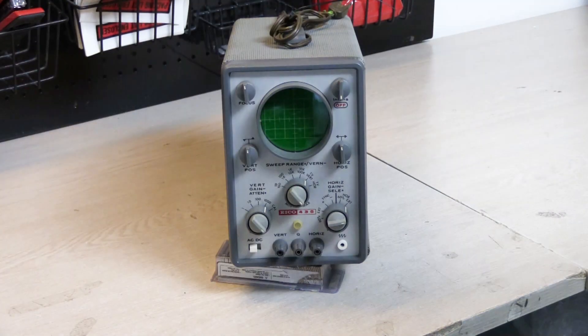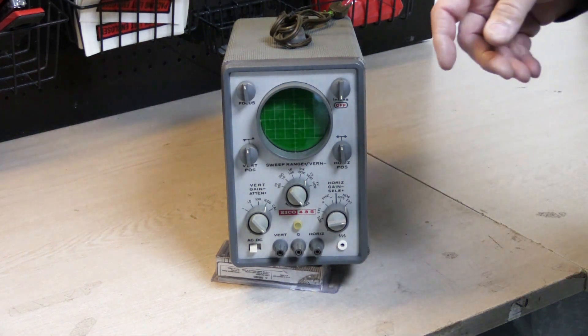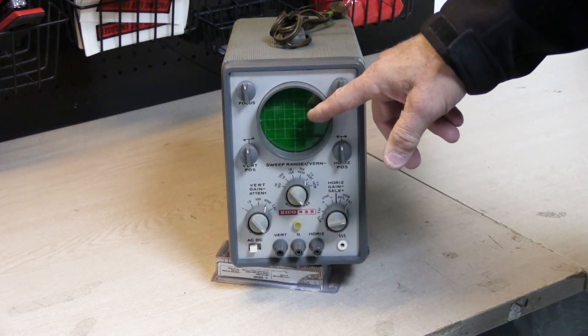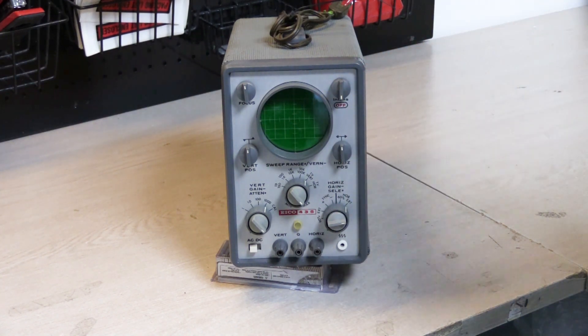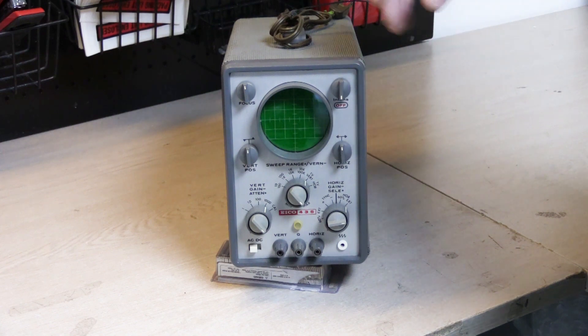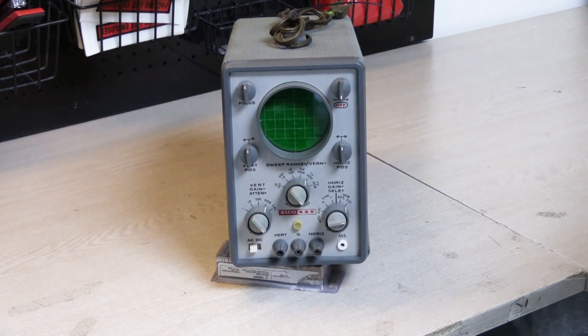So the Ico 435 is just a single channel CRT cathode ray tube oscilloscope. It's got a three inch cathode ray tube here in the front. And the reason I was looking for this particularly is that this is a really small form factor oscilloscope. This is much smaller than your average sized oscilloscope for back in the day.